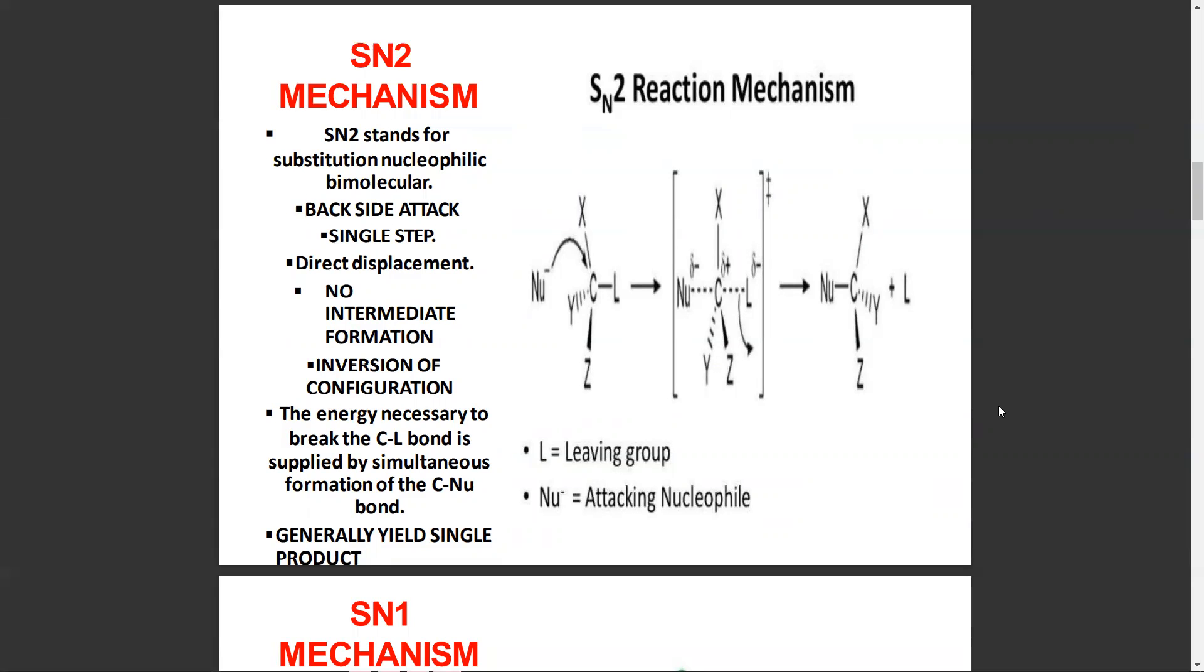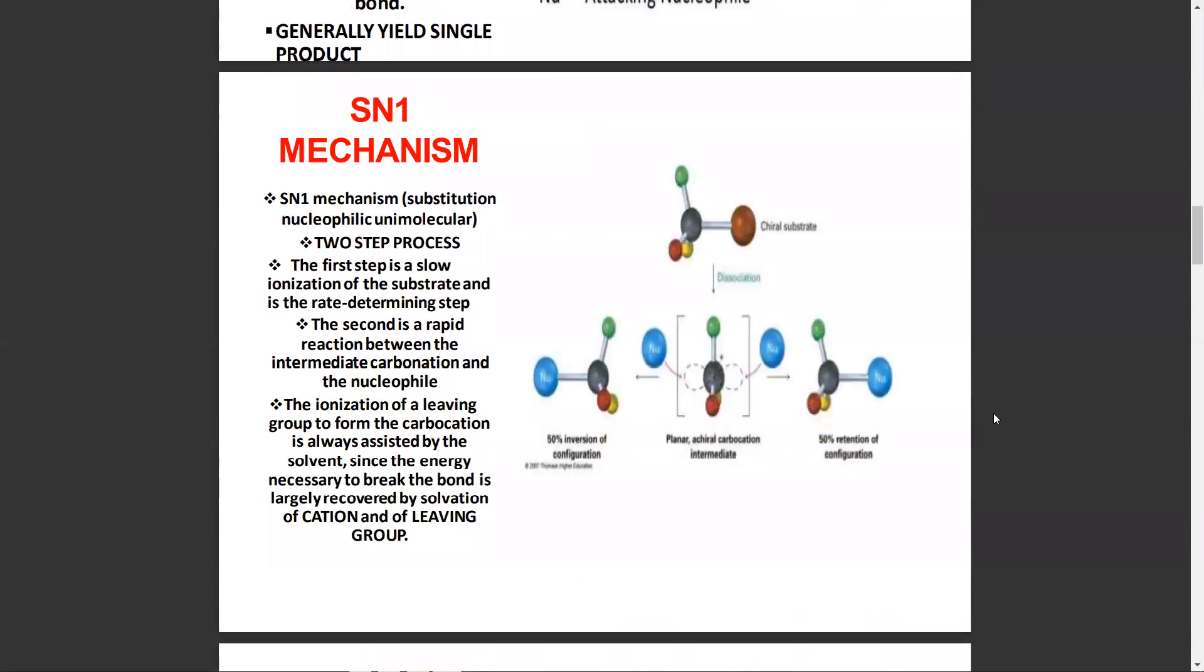In the SN1 reaction, substitution nucleophilic unimolecular is a two-step process. The first step is slow ionization of the substrate and is the rate determining step. The second is the rapid reaction between the intermediate carbocation and the nucleophile. The ionization forms the carbocation and the leaving group, and ionization of the carbocation is always solvent-assisted. The energy necessary to break the bond is largely recovered by solvation of the cation and leaving group.